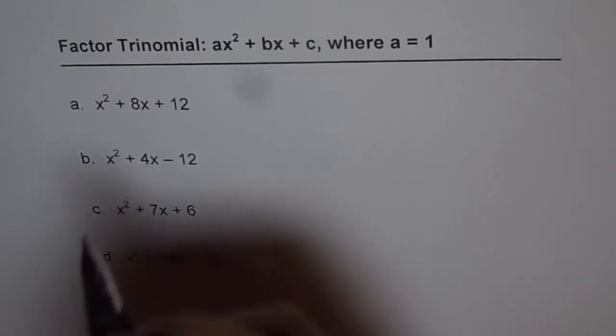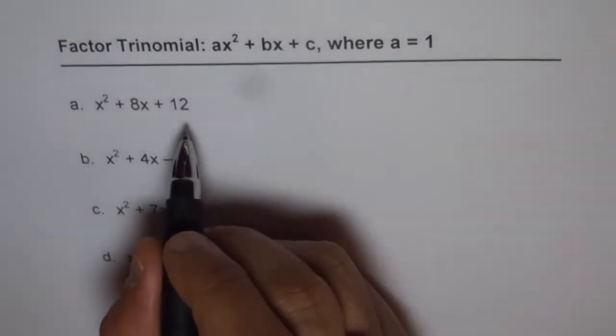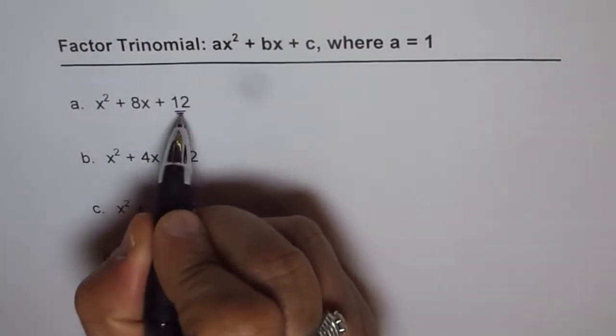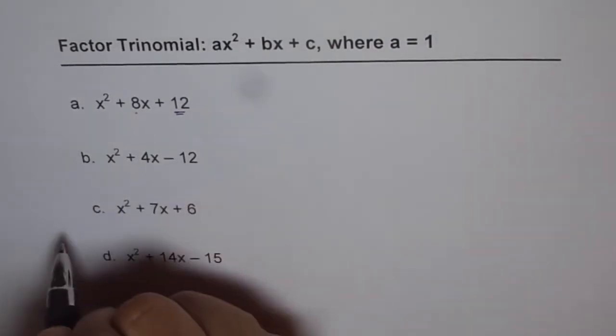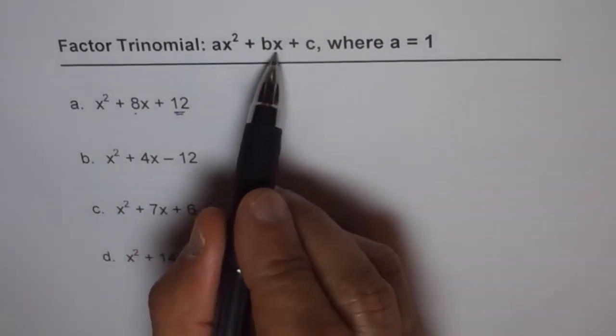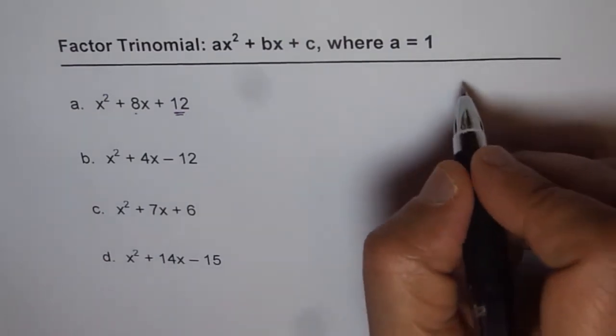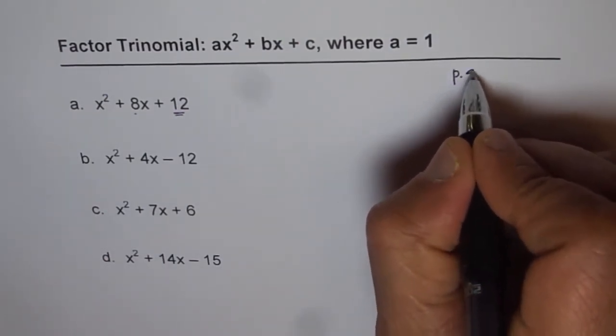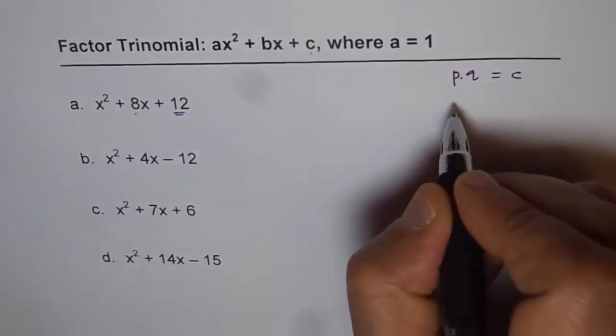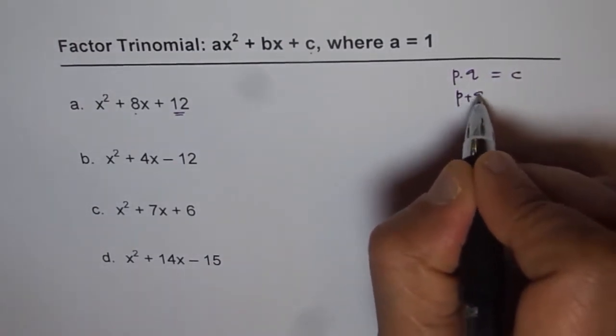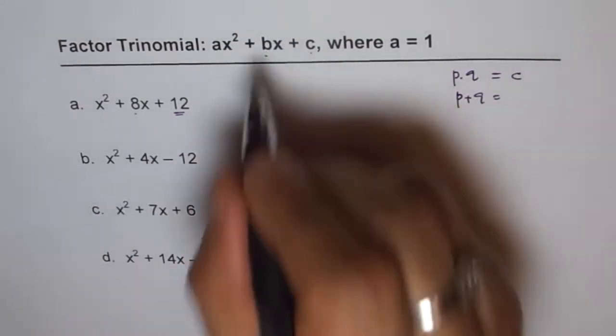Product and sum really means that we are looking for two numbers whose product is this number 12 and sum is the center number, that is the coefficient of x. So we are looking for two numbers p and q, for example, whose product equals c and whose sum equals b, the coefficient of x.